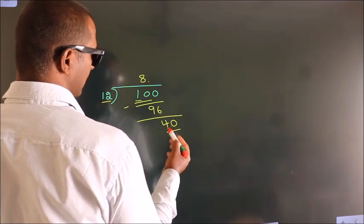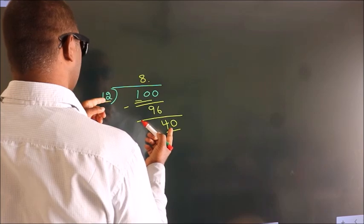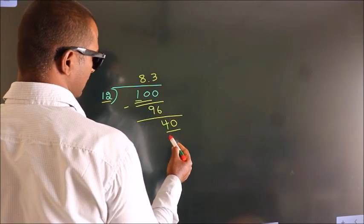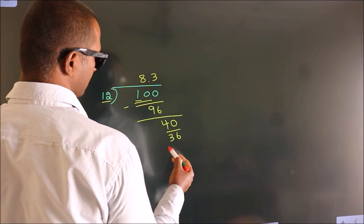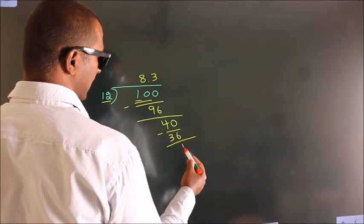So 40. A number close to 40 in the 12 table is 12 times 3, which is 36. Now we subtract and we get 4.